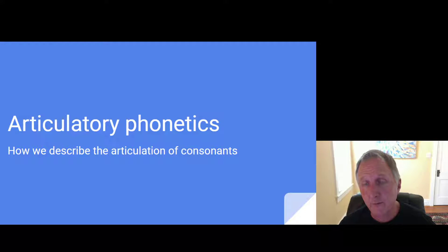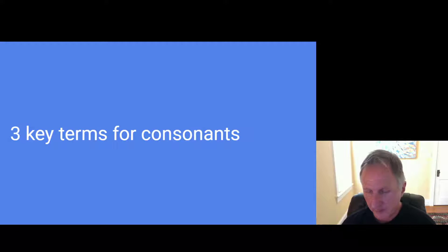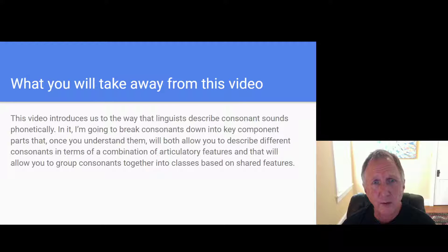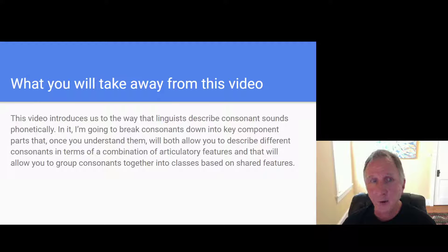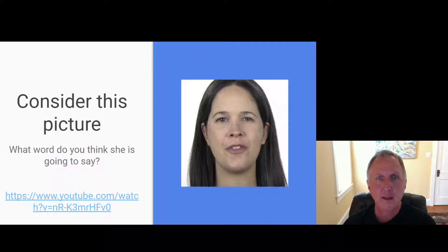We're going to watch the first of a series of videos discussing what we call the articulatory properties of consonants. In this short video we're going to learn three key terms used in the description of how consonant sounds are made in human language. Linguists break consonant sounds down into key component parts, and once you understand these three key parts, you'll be able to describe different consonants and group them into classes based on shared features.